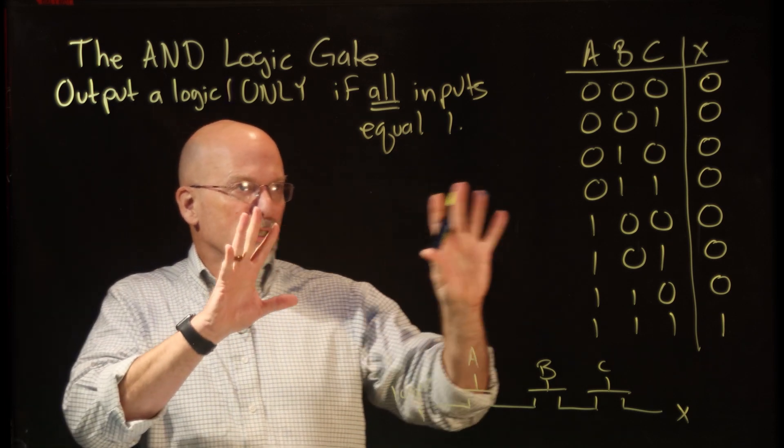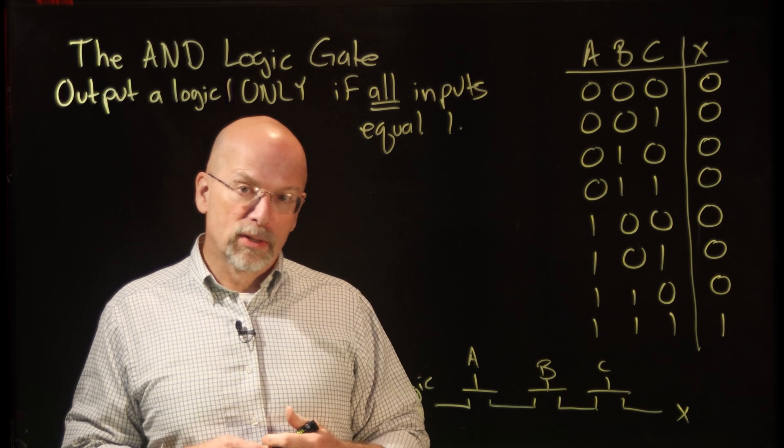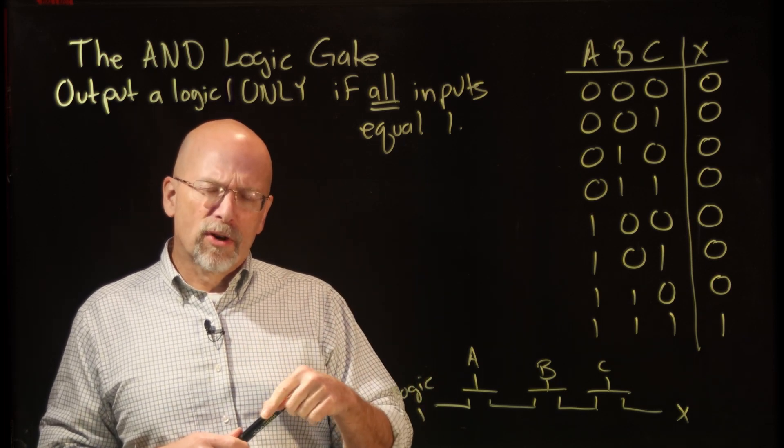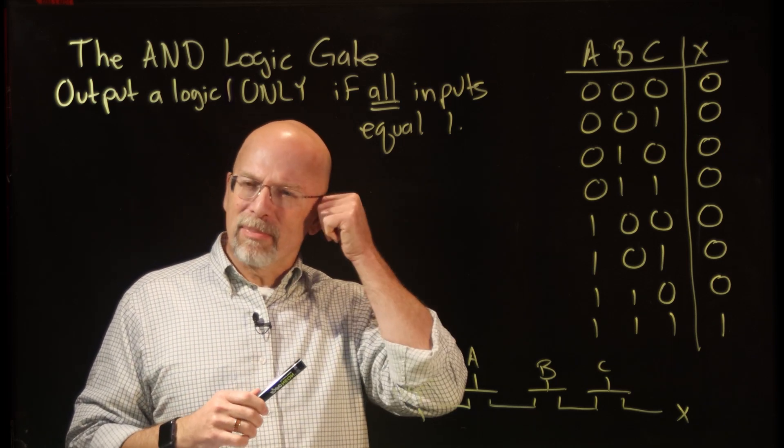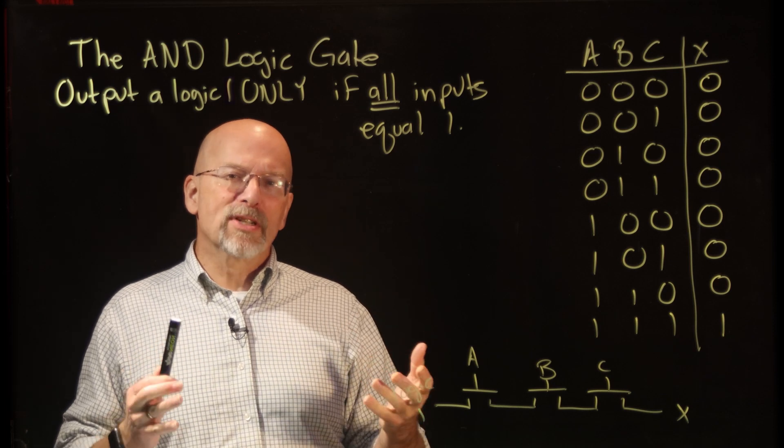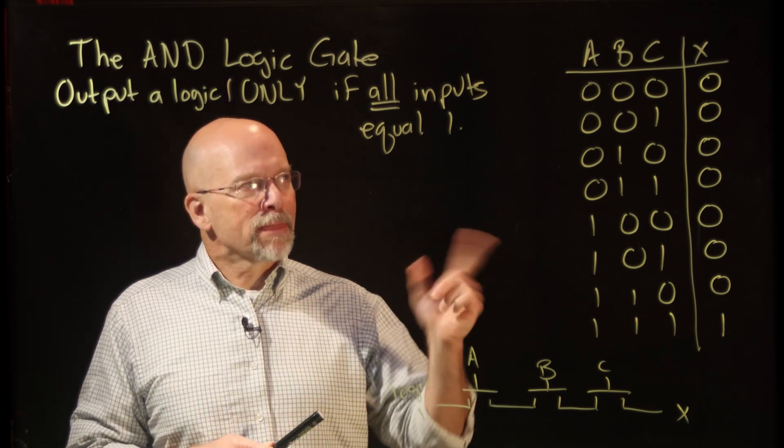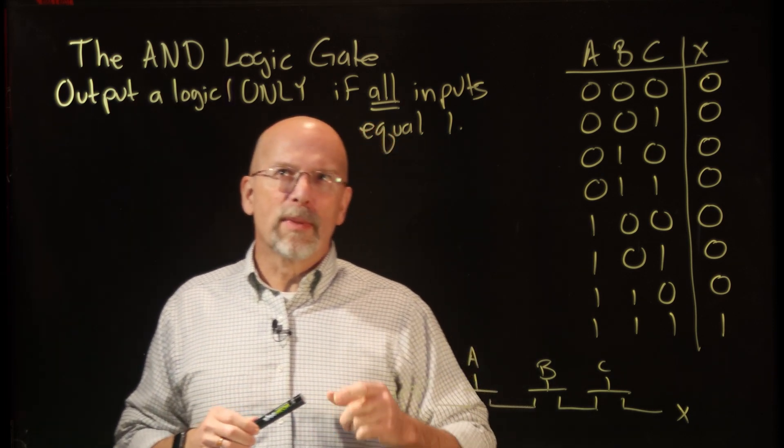Now we need to do two more things in order to talk about this AND gate in future lessons. The first thing is, when we talked about the inverter I showed you that there was a circuit schematic, something that we use to represent the operation of the inverter or the NOT gate. The AND gate has one too. Hopefully it's pretty easy to remember because...